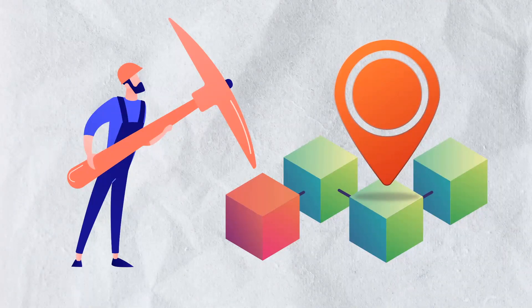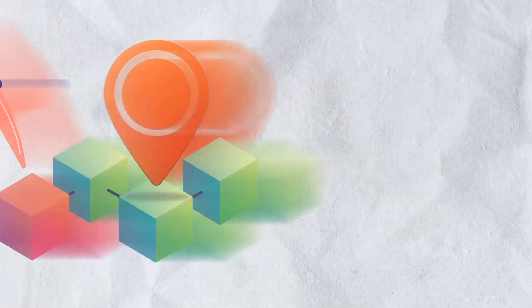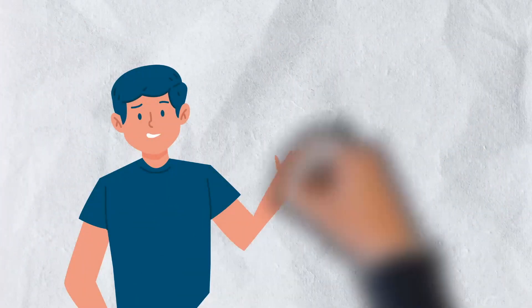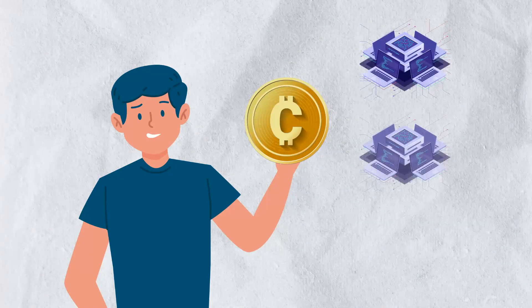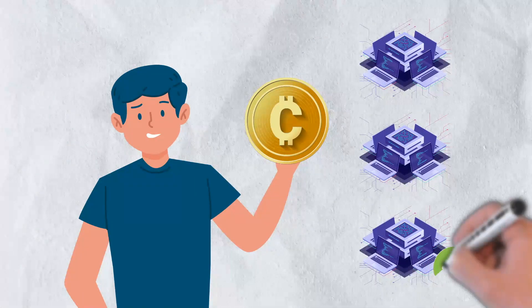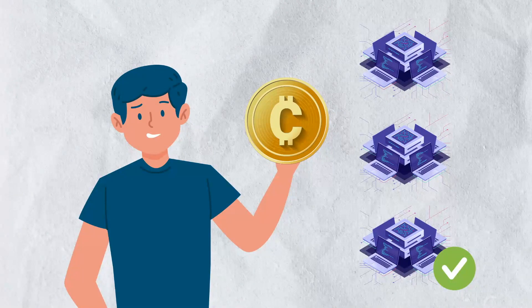Only token holders are qualified to act as validators, and the information in the transaction title is used to select a validator node at random to sign the block and confirm it to the blockchain ledger.